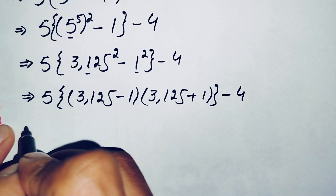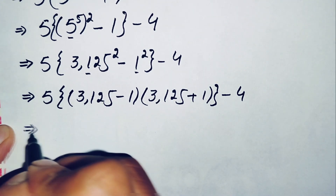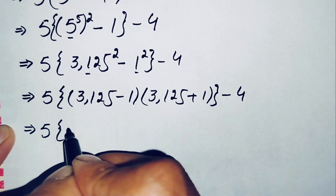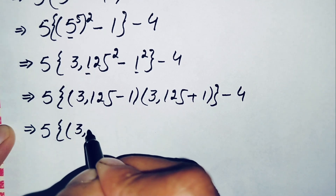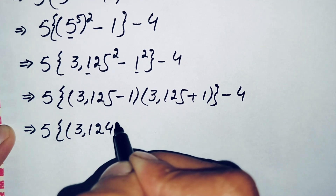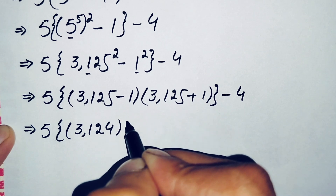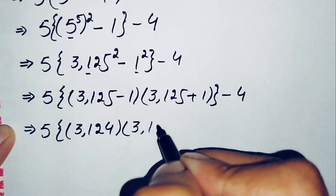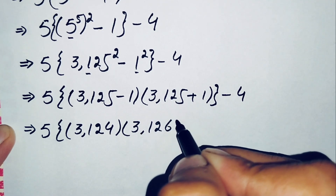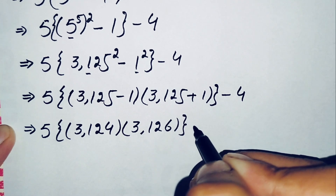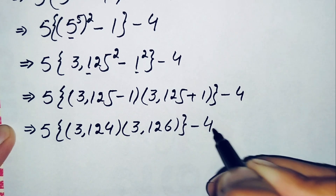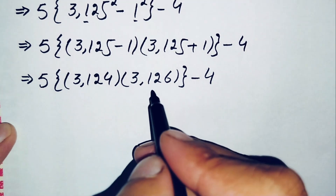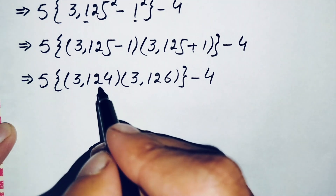Now here we will add and subtract these two numbers. This gives us 5 times 3124 times 3126, minus 4.